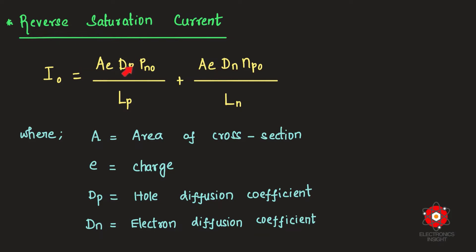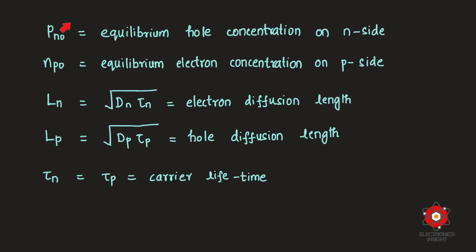The reverse saturation current takes the form: I₀ = A·e·[(Dp·pn0 / Lp) + (Dn·np0 / Ln)], where A is the cross-sectional area, e is electronic charge, Dp and Dn are the hole and electron diffusion coefficients, pn0 is the equilibrium hole concentration on the N-type side, np0 is the equilibrium electron concentration on the P-type side, Ln is the electron diffusion length, and Lp is the hole diffusion length, given by √(D·τ) from Einstein's relation, with τ as carrier lifetime.